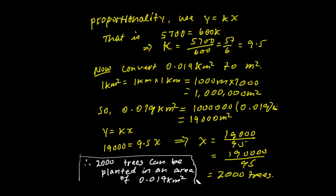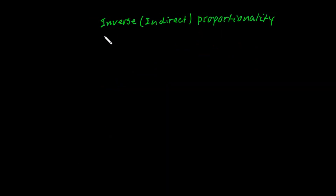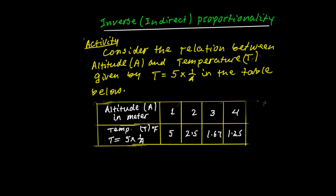Our next subtopic is inverse or indirect proportionality. For the activity, consider the relation between altitude a and temperature t, which is given by the formula t equals 5 times 1 over a. Let's look at the table below.